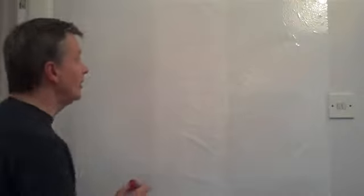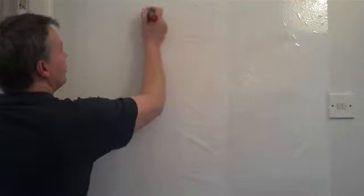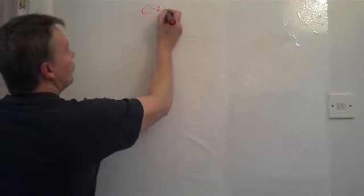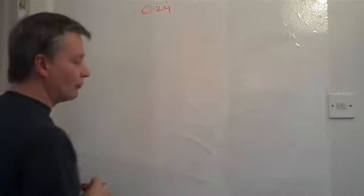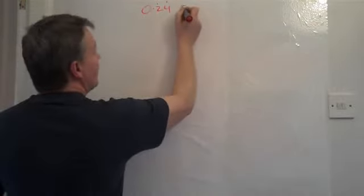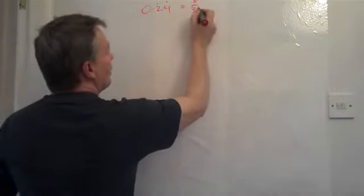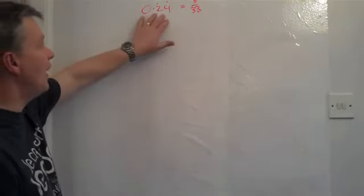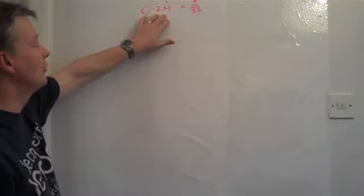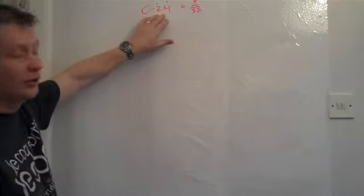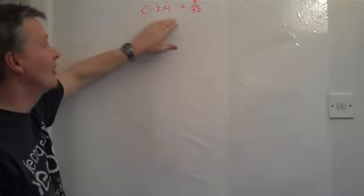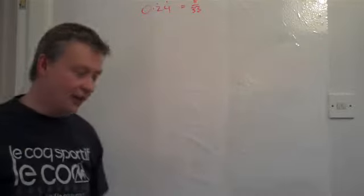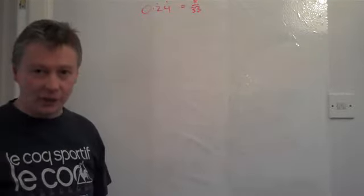And they're usually given in a question that will say something like prove that 0.24 recurring is equal to 8 over 33. So in other words, prove that 0.24 recurring or 0.242424 and so on is exactly the same as 8 over 33 as a fraction.